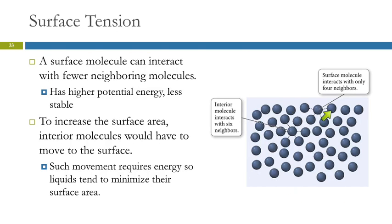Here we have a two-dimensional illustration of a liquid. Molecules at the surface are having interactions with only four neighbors, while an interior molecule has interactions with six neighbors. In order to increase the surface area, we'd have to push some of these out of the way, creating more situations where molecules have fewer interactions. That requires an input of energy — it's less stable, like a ball rolling up a hill. So when water minimizes its surface area, it minimizes its energy and becomes more stable.